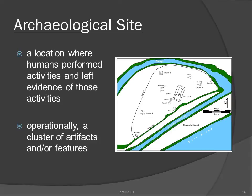The fourth type of archaeological data is the site, which can be defined as a location where humans performed activities and left evidence of those activities. Operationally, we recognize sites as clusters of artifacts and/or features. We use the artifacts, features, and ecofacts found at a site to reconstruct the activities that took place there and fit them into a reconstruction of the past culture.